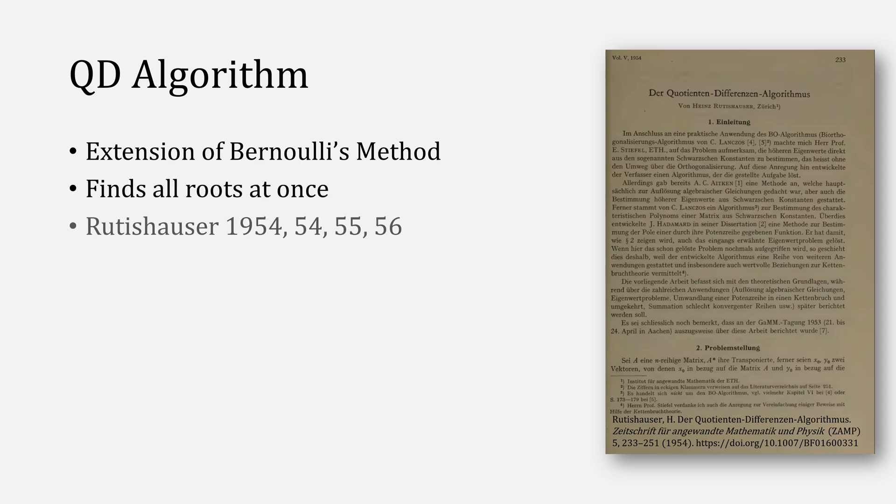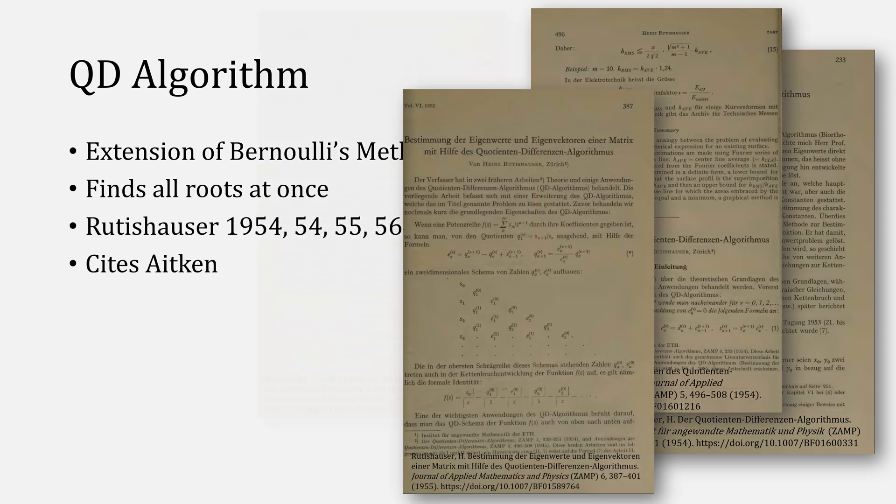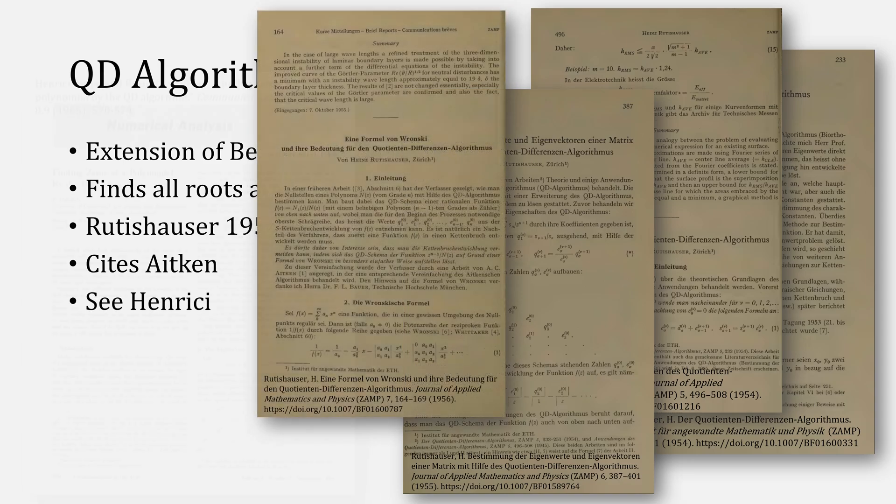Although that extension to Bernoulli's method is a little bit tricky to read, I actually want to discuss briefly Rutishauser's extension of Bernoulli's method, which also finds all the roots at once, published in a series of papers that also cite Aitken. If you're not able to get those papers, I also recommend this paper by Henrici.